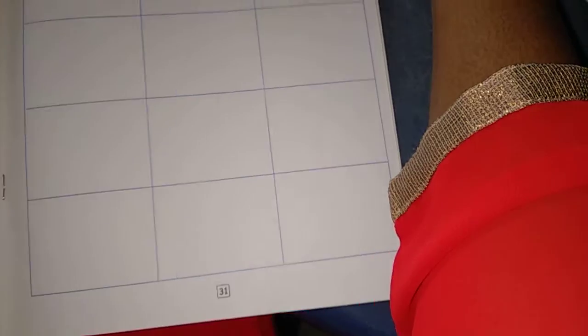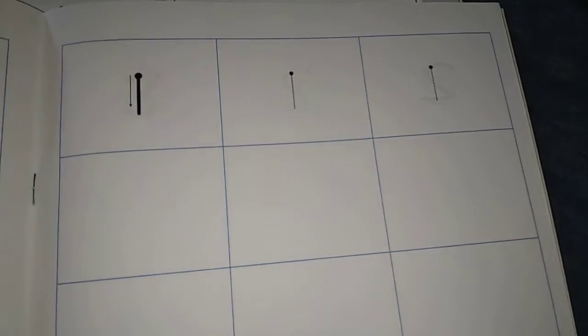So in page number 31, see here, number 1 is there. Here, there is the process how to write. So once again I am going to tell you. So observe all of you carefully, okay?